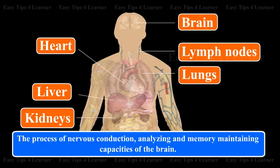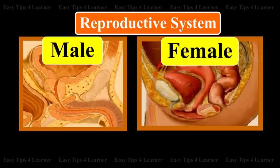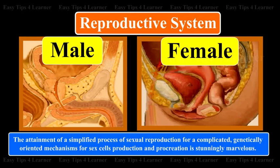The process of nervous conduction, analysing and memory maintaining capacities of the brain, and the holistic visual perception of the eye are all wonderful inventions of nature towards a simple process of living. The attainment of a simplified process of sexual reproduction for complicated genetically oriented mechanisms for sex cell production and procreation is stunningly marvellous.